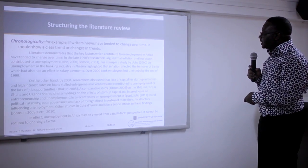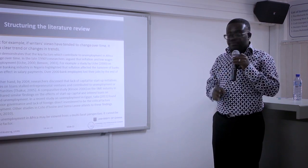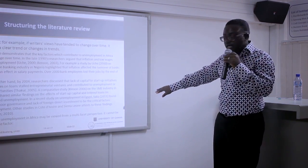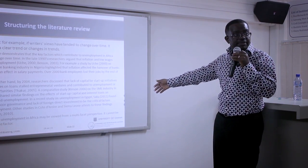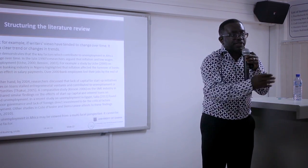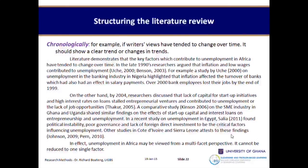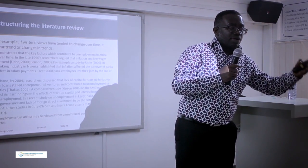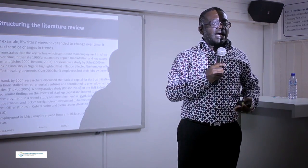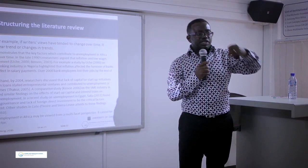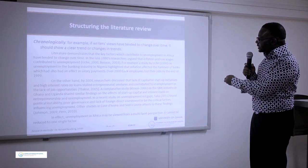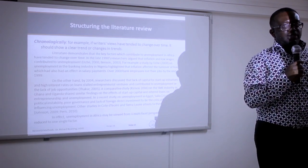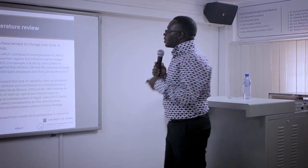Johnson 2009 and Penn 2010 — he may not have read those entirely but found in the abstract that they were about political instability affecting unemployment, and that was enough. So you have three time categories: the late 1990s, early 2000s, and recent times. What this has been able to do is look at the factors influencing unemployment in each block. In effect, the writer concludes that unemployment in Africa may be viewed from a multi-faceted perspective — it cannot be reduced to a single factor, and he has illustrated that through chronological writing. The objective of chronological writing is to show how the issue or perspectives on it have changed over time.